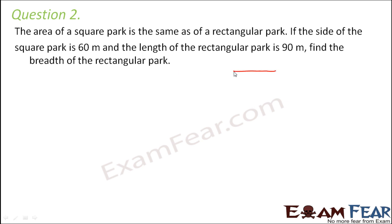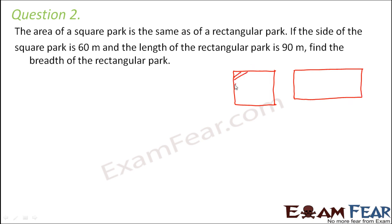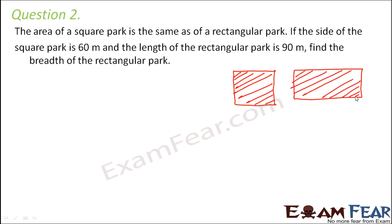There are two parks — one is in the shape of a square and the other is in the shape of a rectangle. The area of the square park and the area of the rectangular park are the same. The side of the square park is 60 meters, and the length of the rectangular park is 90 meters.